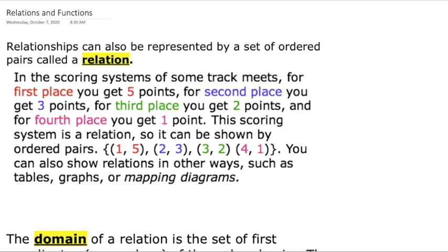For instance, let's say that in a track meet the first place participant gets five points, second place gets three points, third place gets two points, and fourth place gets one point. We can create a relation between the place they finished and the points they earned. The x coordinate represents the place they finished, and the y coordinate is how many points they got based on that.